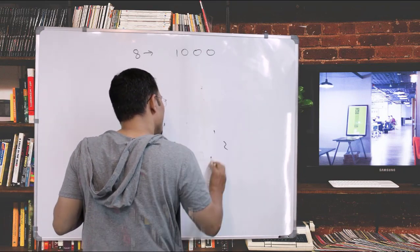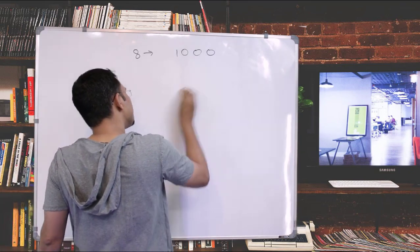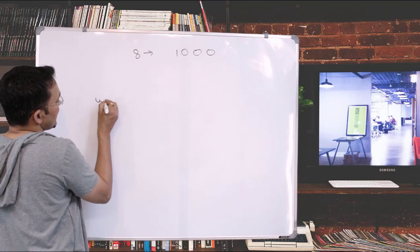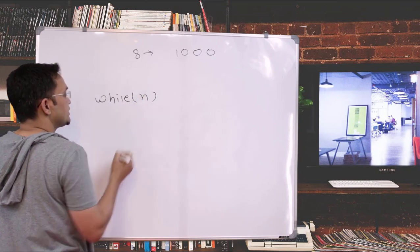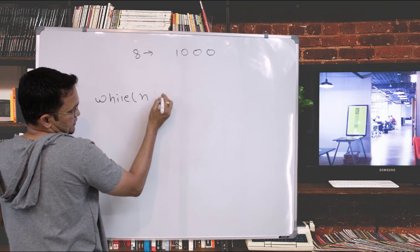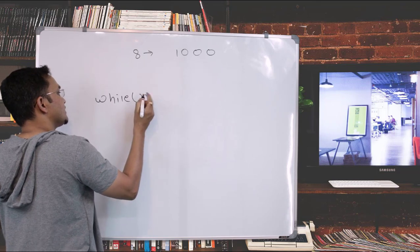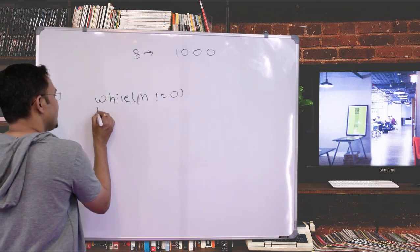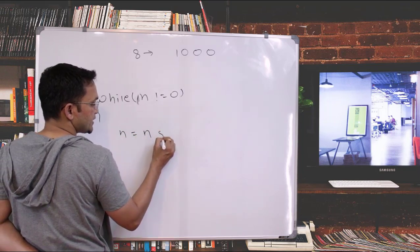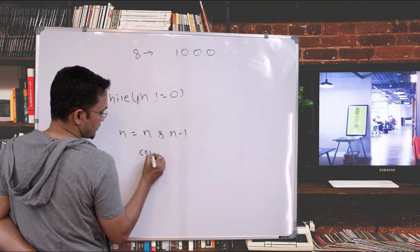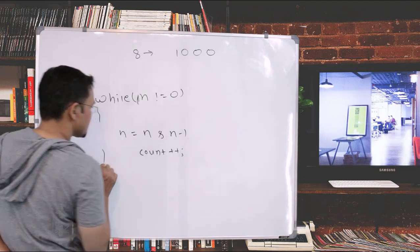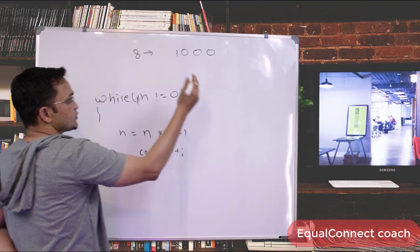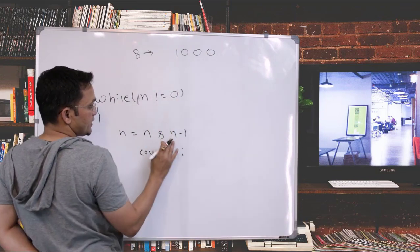Instead of that, I have a more efficient way which also uses a while loop but is a little bit better. In this method, the while loop runs while the number is not equal to 0, and inside I perform n = n AND (n-1), then increment the count. Let's say for example I have given the number 8, which is 1000 in binary. I need to do the AND operation.